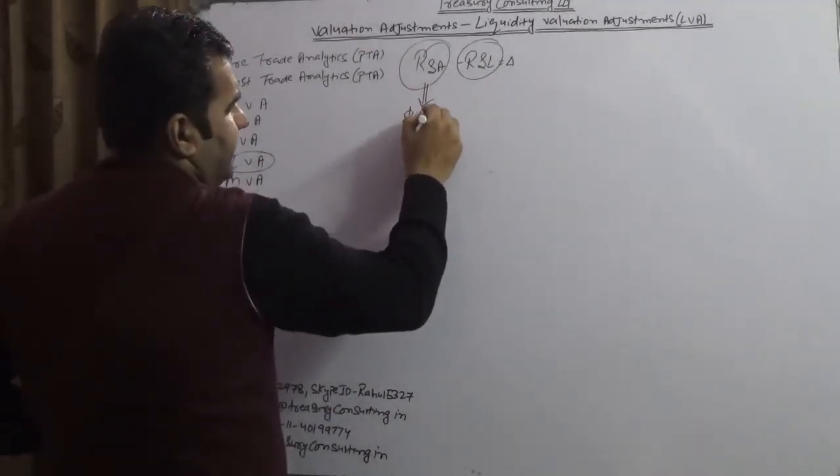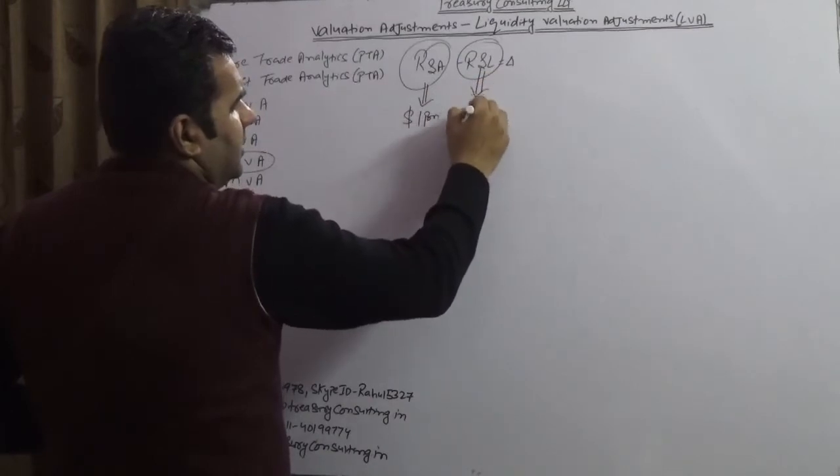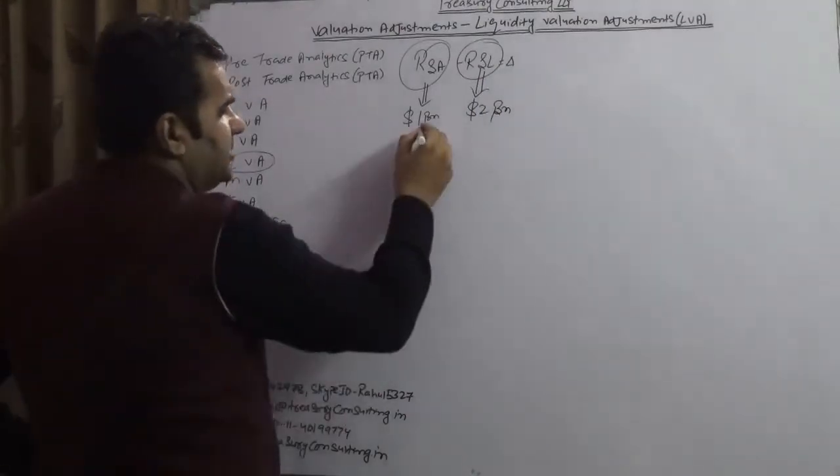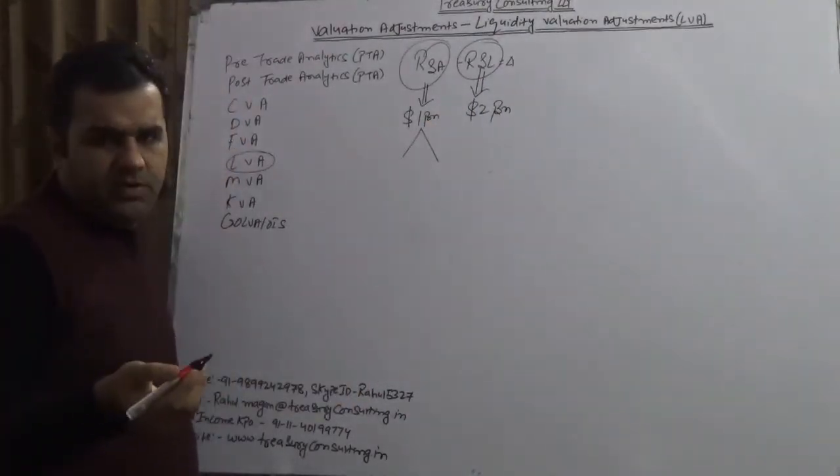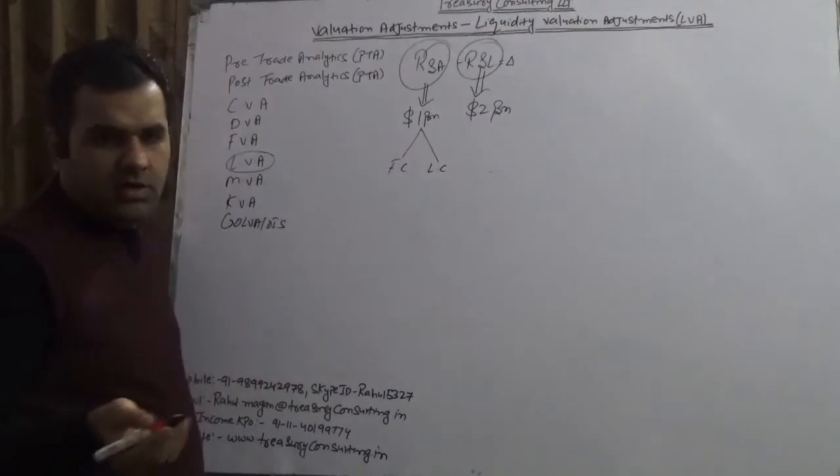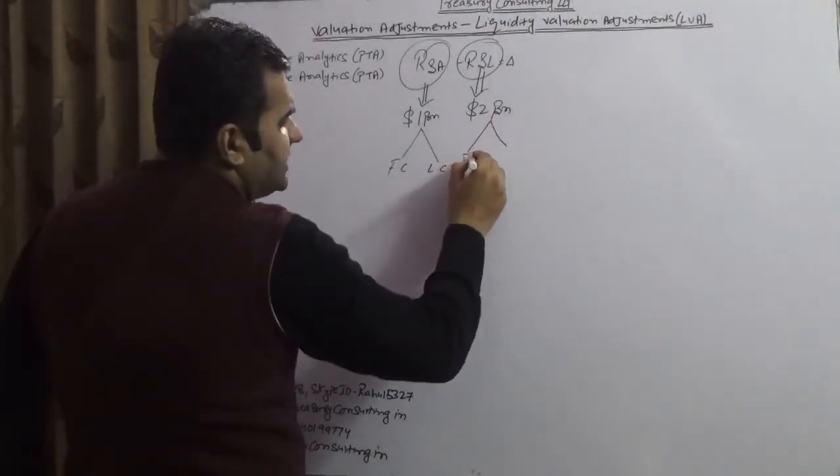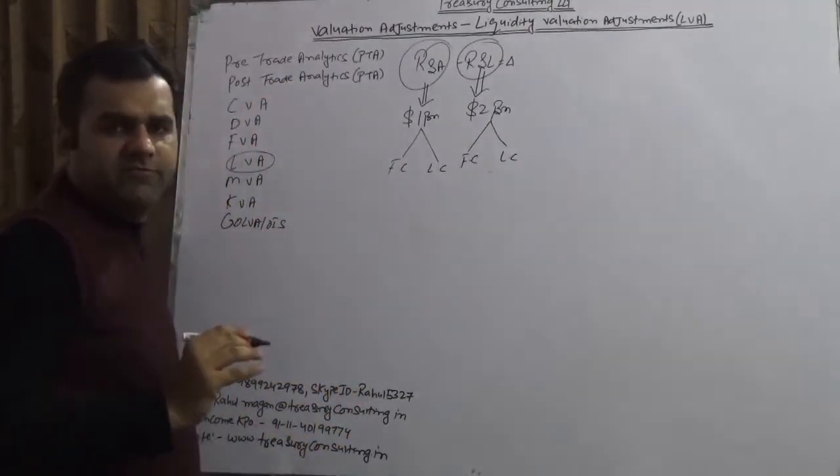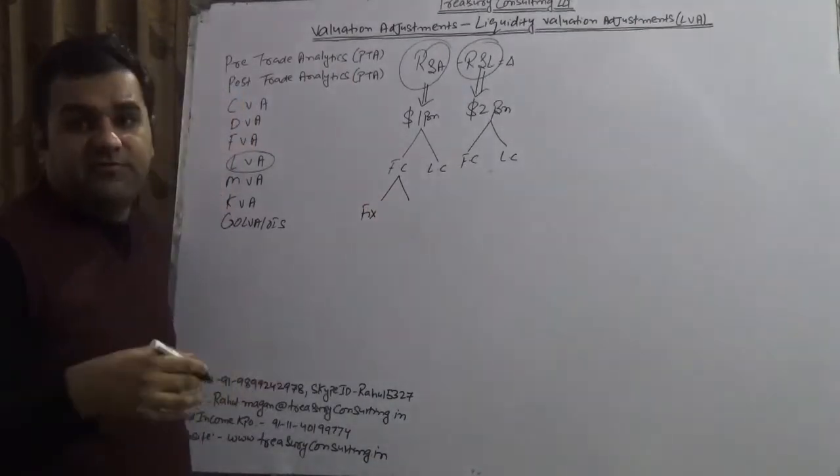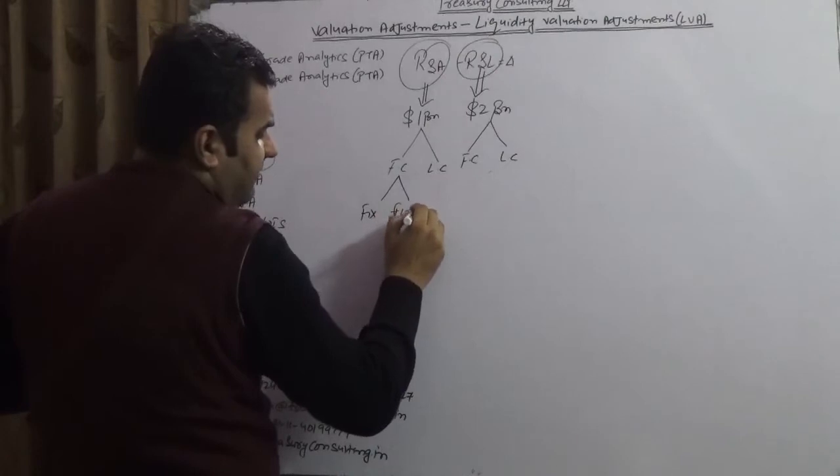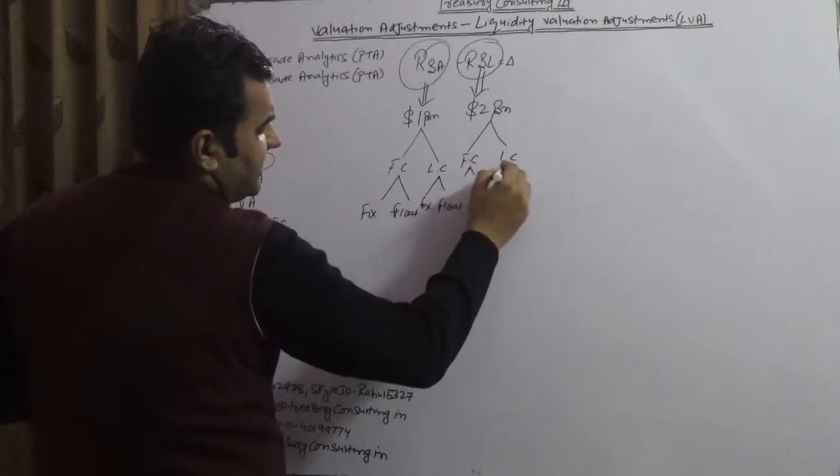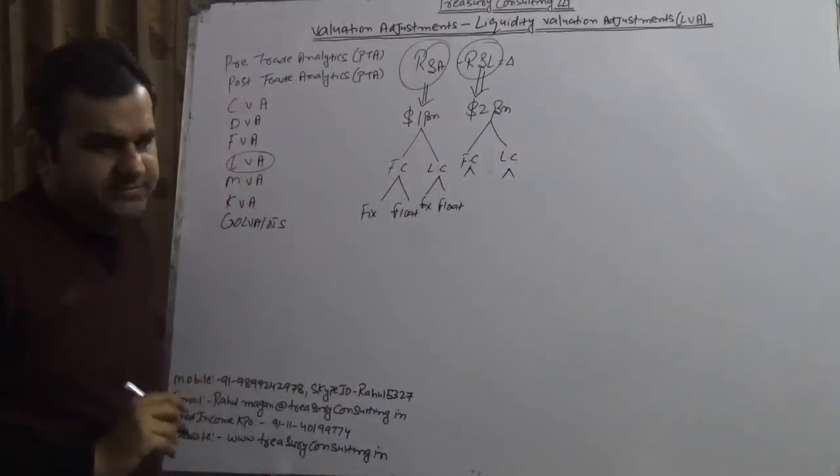Suppose we have an asset of $1 billion and a liability of $2 billion. This asset could be foreign currency or local currency. Similarly, the liability could be foreign currency or local currency. In our technical language, we categorize these as fixed and float - both for assets and liabilities.